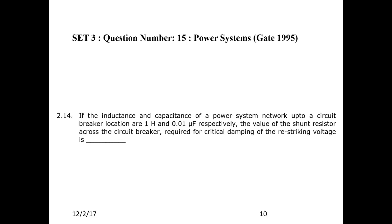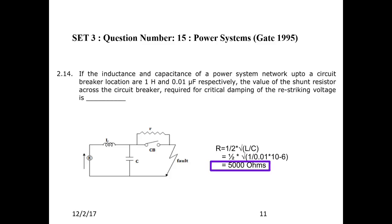Next question: If the inductance and capacitance of the power system network up to the circuit breaker location are 1 Henry and 0.01 microfarad respectively, find the value of the shunt resistor across the circuit breaker required for critical damping of the restriking voltage. The formula is R = (1/2) × √(L/C). By substituting the inductance and capacitance values, the resistance is 5 kilo ohms.